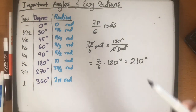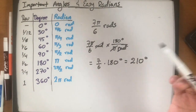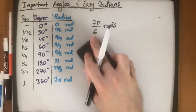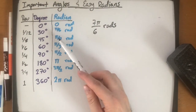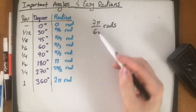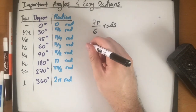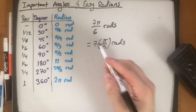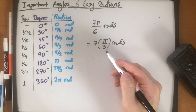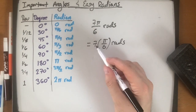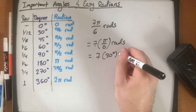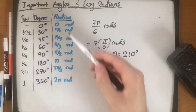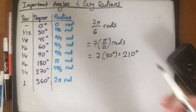However, there is an easier way to do this conversion. I know that pi over 6 radians is 30 degrees. So I can rewrite 7 pi over 6 as 7 times pi over 6 radians. That tells us the angle is 7 times 30 degrees, because pi over 6 radians is 30 degrees. So 7 times 30 is 210 degrees. If your radians can be referred back to one of these important angles, you can very easily convert.